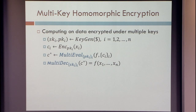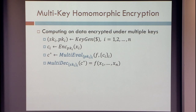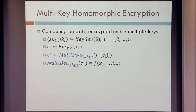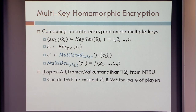Let's stop and think. Suppose Cynthia and I wanted to compute on our separately encrypted ciphertexts and then decrypt. Which secret key would we need? Definitely you cannot do it without my secret key, because my input was encrypted under that — and similarly for Cynthia's key. So we need both keys. In general, you would need all of the corresponding secret keys in order to decrypt something evaluated from all of these ciphertexts. So we're going to have a multi-decryption that does that. We want the same correctness guarantees as from single-key homomorphic encryption.